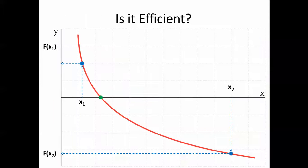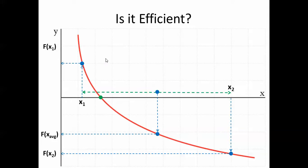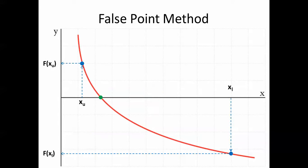However, this process has some inefficiency because it gets to the root regardless of which initial point is closer. For example, if x1 is much closer to the root than x2, the bisection method just takes the midpoint without accounting for that. It will take more iterations to converge, making it slower — essentially wasting time when one point is already very close to the root.